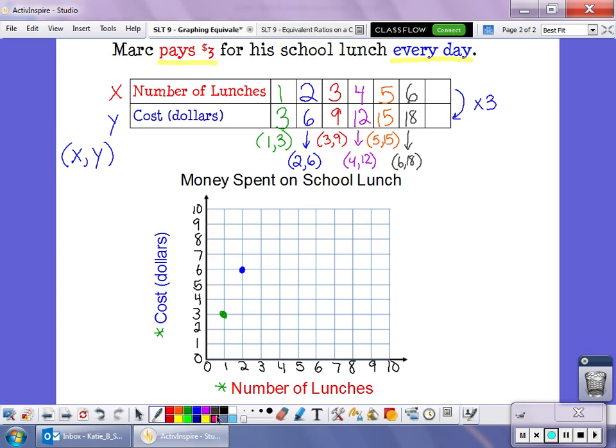And then six school lunches, six times three is eighteen. Ordered pair of six, eighteen. And last but not least, if he bought seven school lunches, seven times three is twenty-one. And an ordered pair of seven and twenty-one. Now, my graph only counts up to ten. So what I'm going to do is I'm going to put on as many points as I can. I've got one lunch is three dollars. Two lunches is six dollars. The only other one I can fit on here is three lunches is nine dollars.